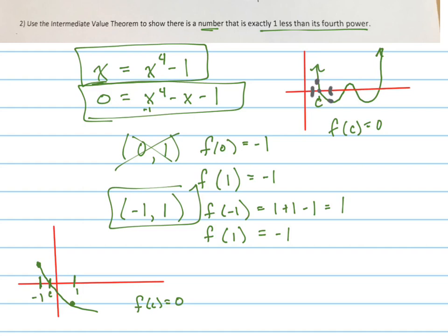And since that's true, since F of c equals zero, we know that this equation right here has a solution. And if that equation has a solution, then this equation has a solution too, because they're the same equation. So we're going to state that. And we're going to carefully use the intermediate value theorem to state that.